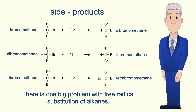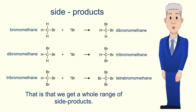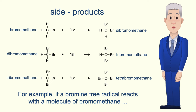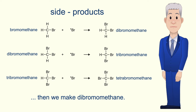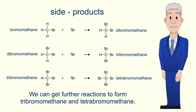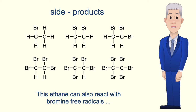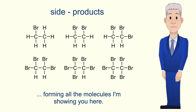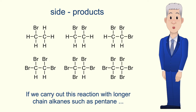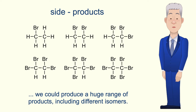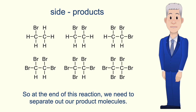Now there is one big problem with free radical substitution of alkanes, and that is that we get a whole range of side products. For example, if a bromine free radical reacts with a molecule of bromomethane then we make dibromomethane. We can get further reactions to form tribromomethane and tetrabromomethane. Ethane can also react with bromine free radicals, forming a range of further molecules. And if we carry out this reaction with longer chain alkanes such as pentane, we could produce a huge range of products including different isomers. So at the end of this reaction we need to separate out our product molecules.